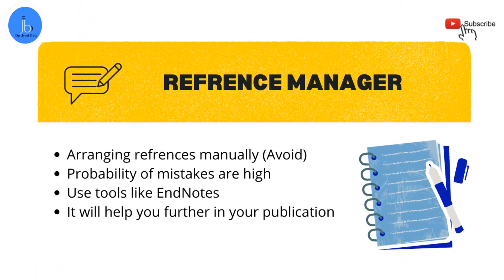Another mistake many students still make is not using reference managers and arranging references manually. Many institutes and universities ask for references in alphabetical order by name, while others ask for numbered references. If your thesis is around 150 to 200 pages and you are using around 200 to 250 references arranged manually, the chances of mistakes will be high. To reduce these mistakes, you should use EndNote or Mendeley for arranging your references. This will not only help you with the thesis but also when compiling your publications.